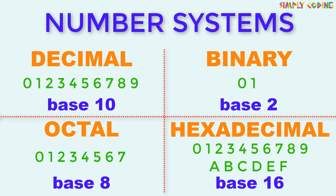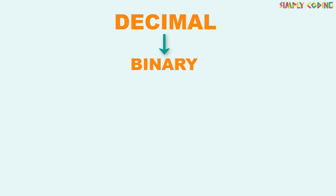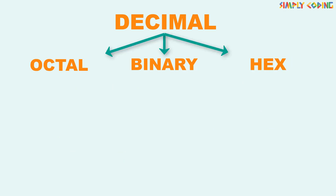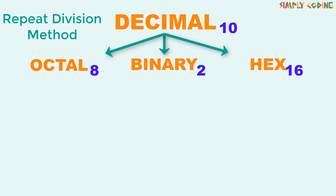So now we will learn how to convert from one number system to another. We will start with learning how to convert from decimal to binary, octal, or hexadecimal. So what we are doing is to convert a number with base 10 to base 2, 8, or 16. For this, we will use the repeat division method.